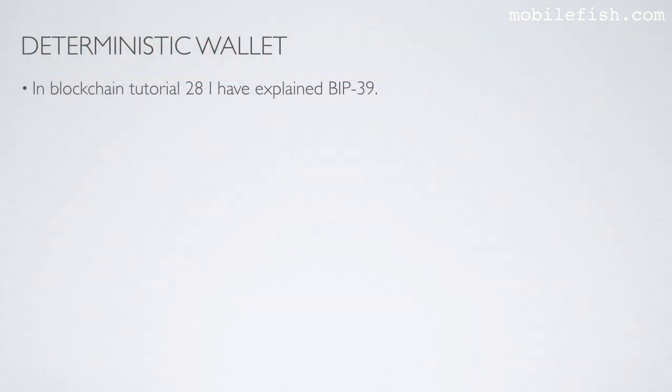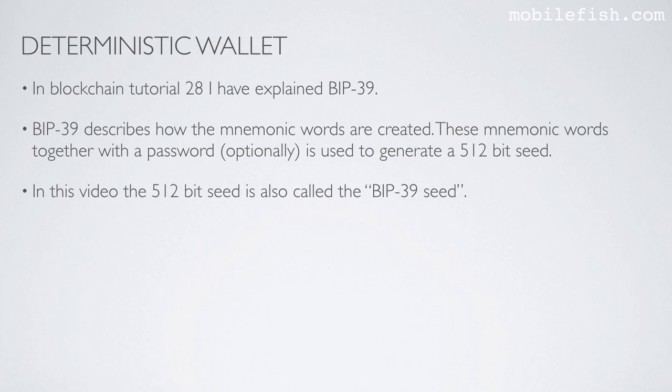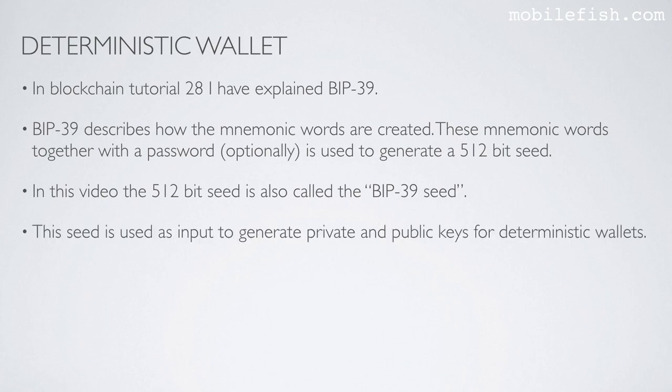In blockchain tutorial 28 I have explained Bitcoin Improvement Proposal 39. Bitcoin Improvement Proposal 39 describes how the mnemonic words are created. These mnemonic words together with a password, optionally, is used to generate a 512-bit seed. In this video the 512-bit seed is also called the BIP39 seed. This seed is used as input to generate private and public keys for deterministic wallets.